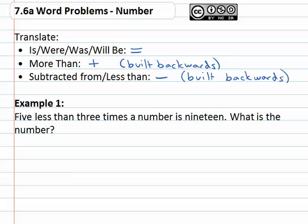So if for example we had five less than three times the number is nineteen and we want to know what is the number, we can break this into pieces. We have five less than. Five less than means we're subtracting five from something. Well five less than what? Five less than three times the number. Well we're subtracting five then from three times the number.